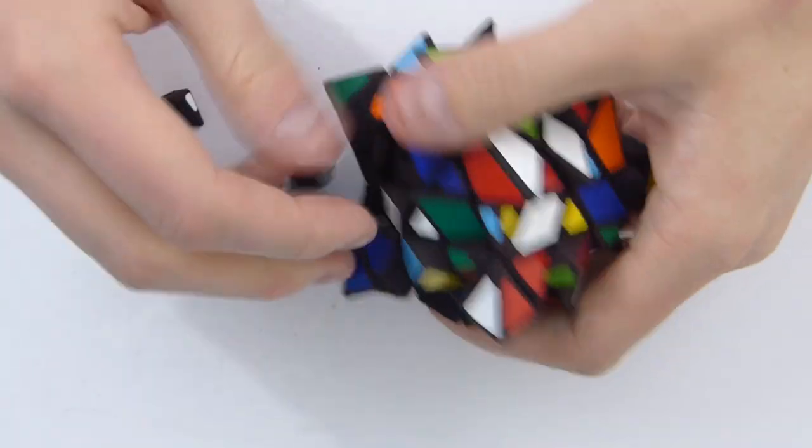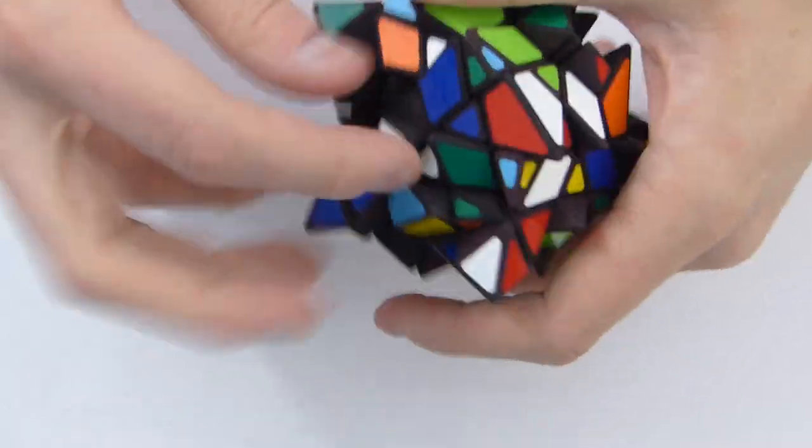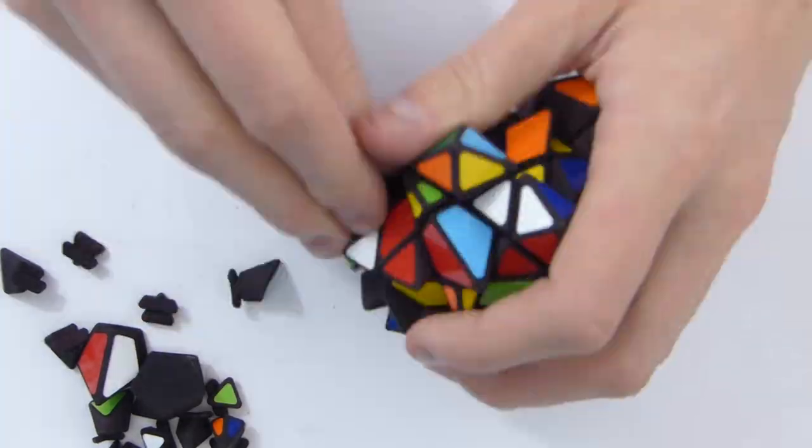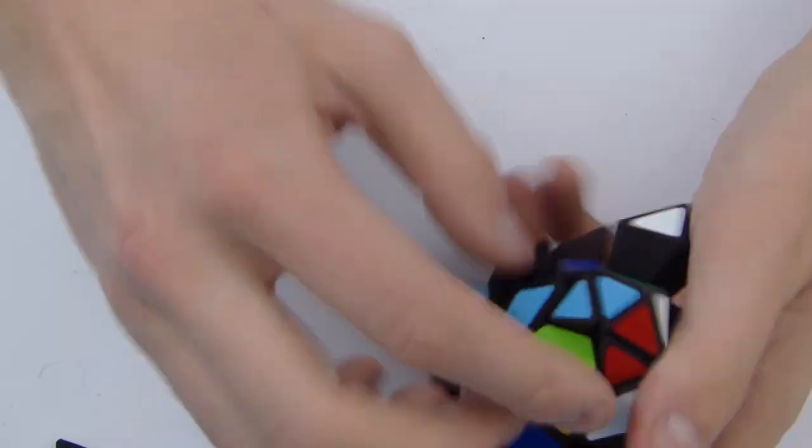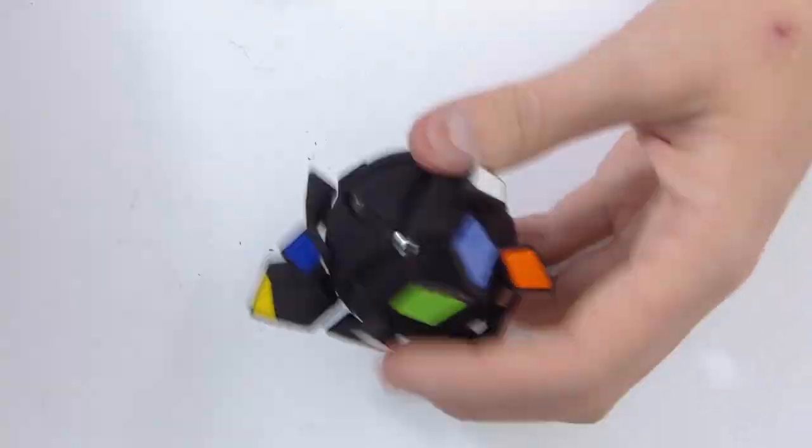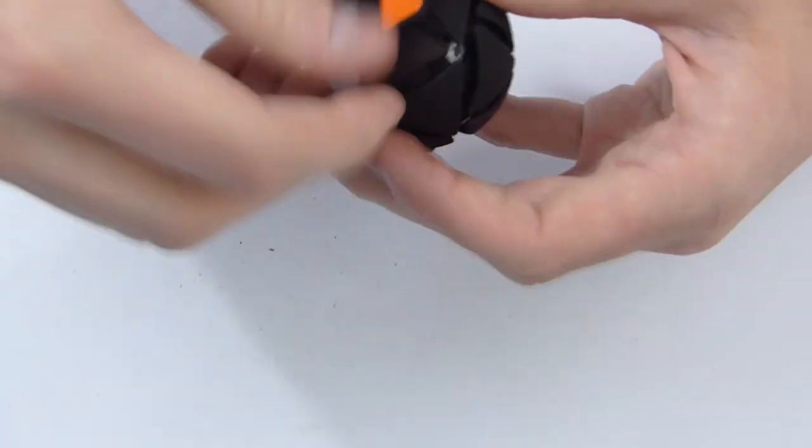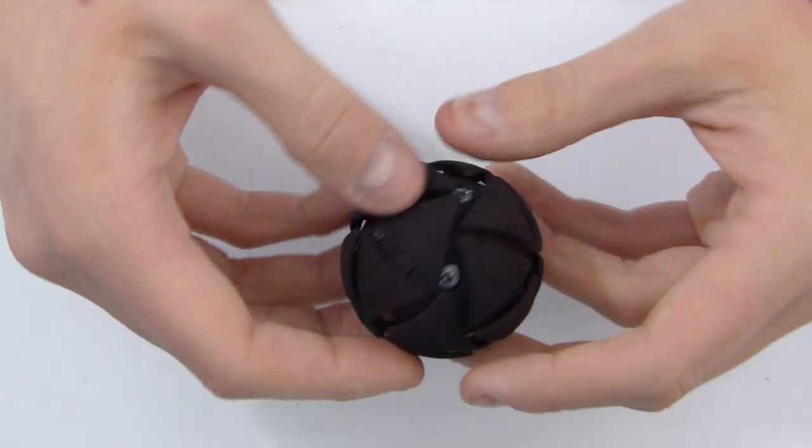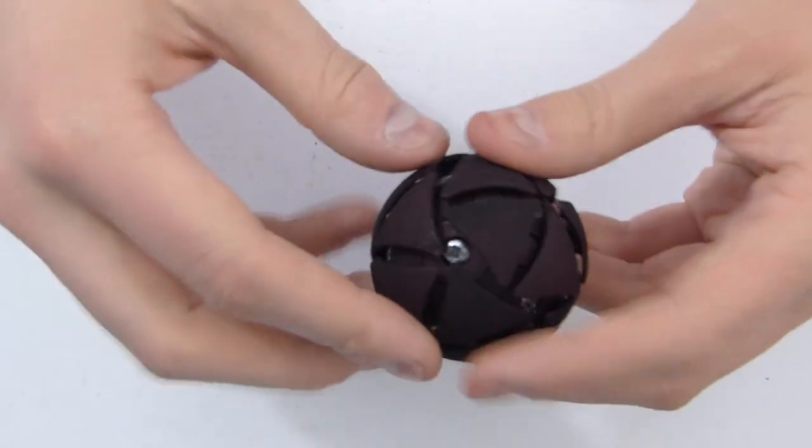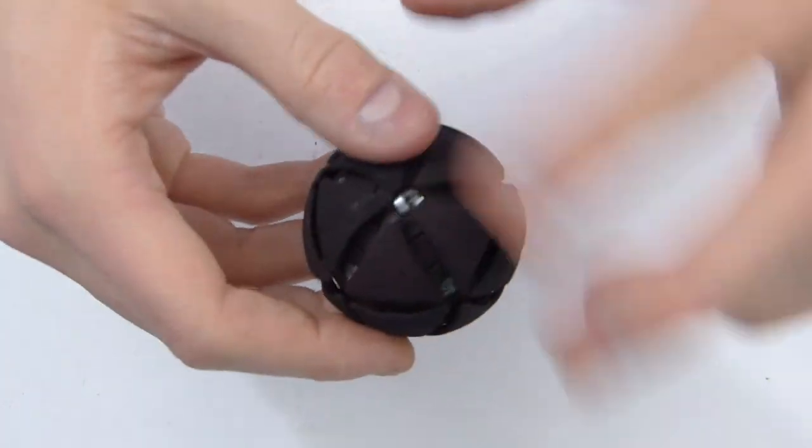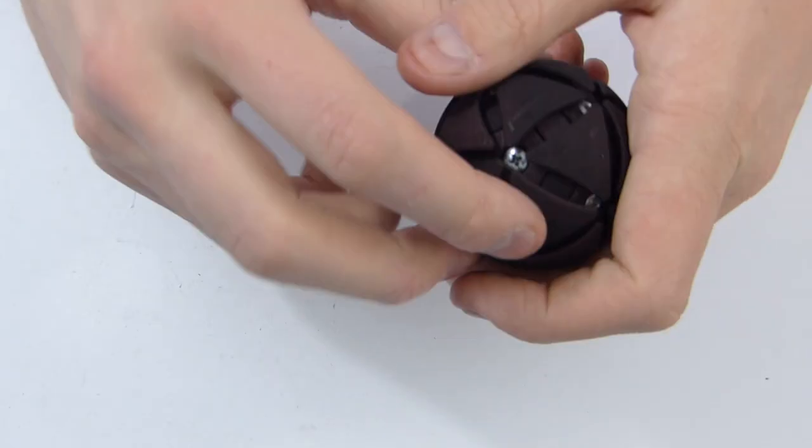So let's start by taking the pieces out and see where we go from there. Okay, so I've disassembled about everything except the inner mechanism. Now I'm going to try to show you this without disassembling the whole thing, otherwise it's going to take me a long time.